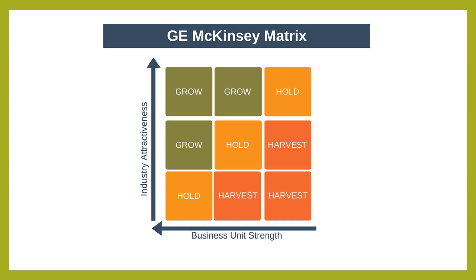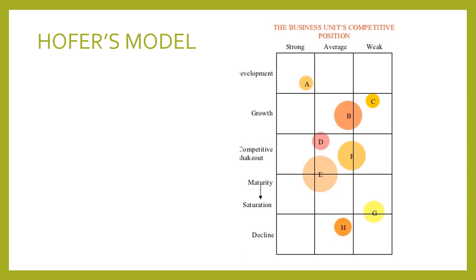Now we will study Hoffer's model and Shell's Directional Policy Model in this class. According to Hoffer's model, business is positioned in a 15 cell matrix based on two major variables: the stage of the business unit's competitive position and the production market development stage of that particular company. It was developed by Charles Hoffer and it was a refinement of the General Electric McKinsey portfolio matrix. This matrix is also called the life cycle portfolio matrix.